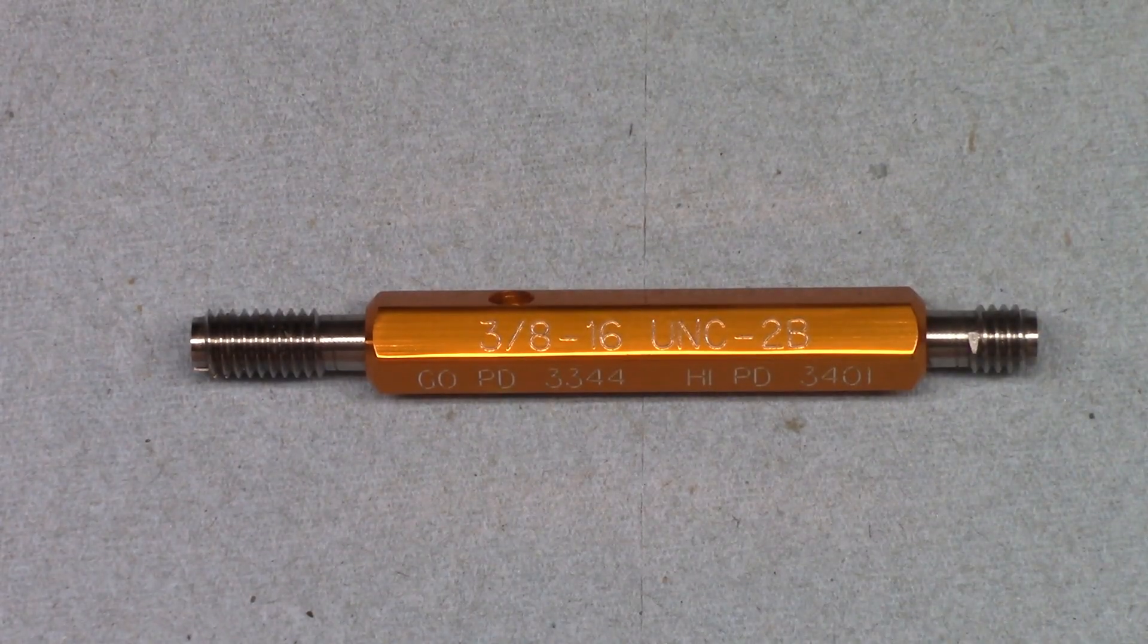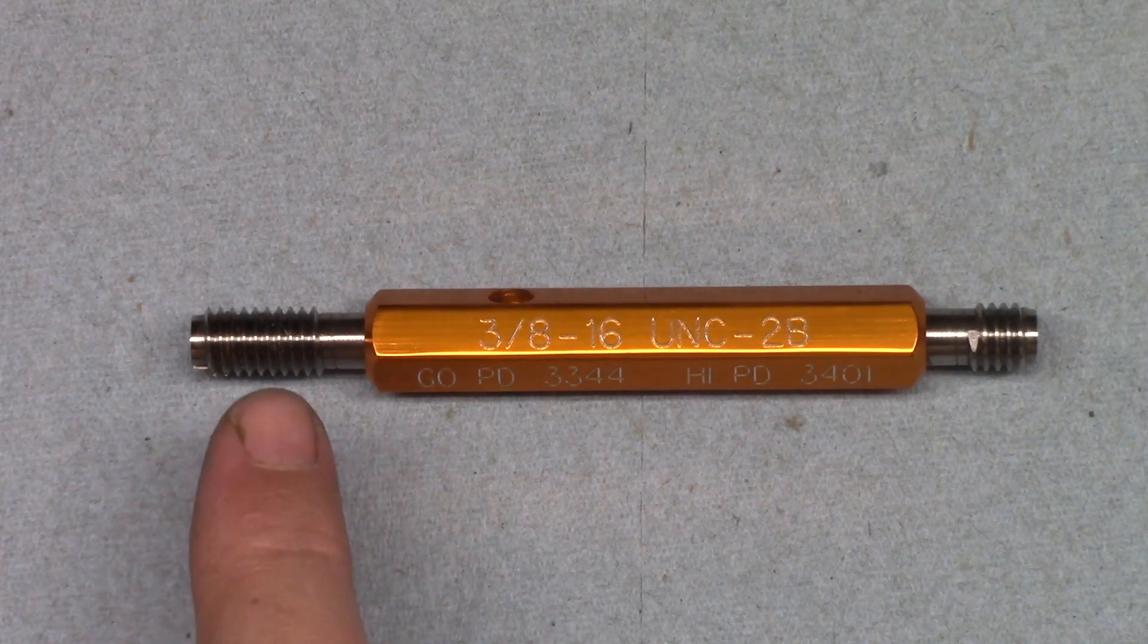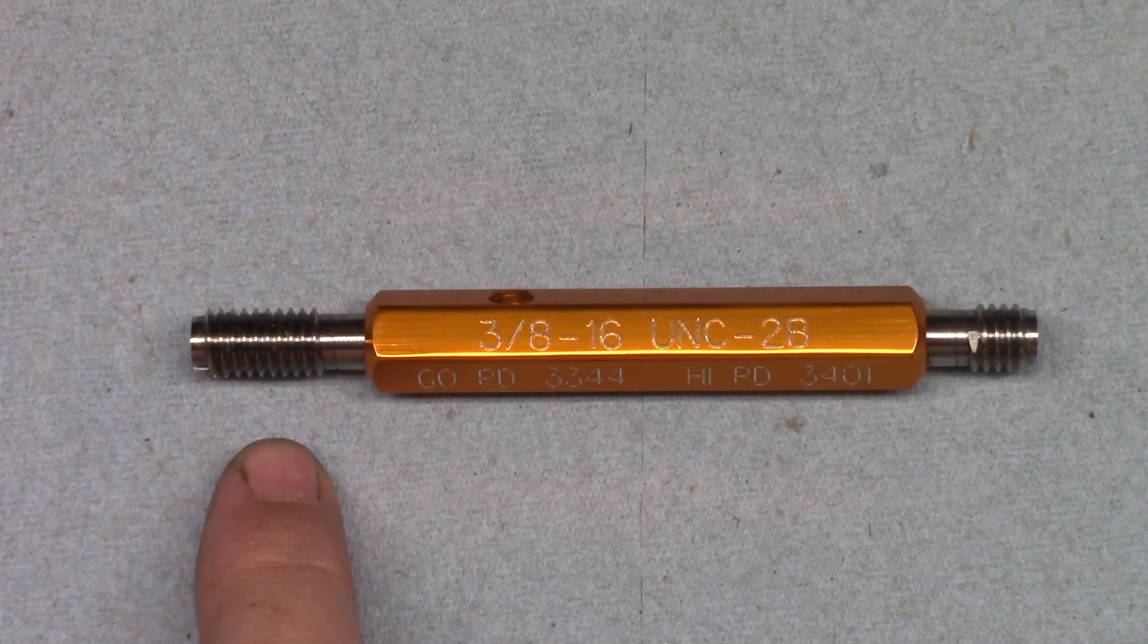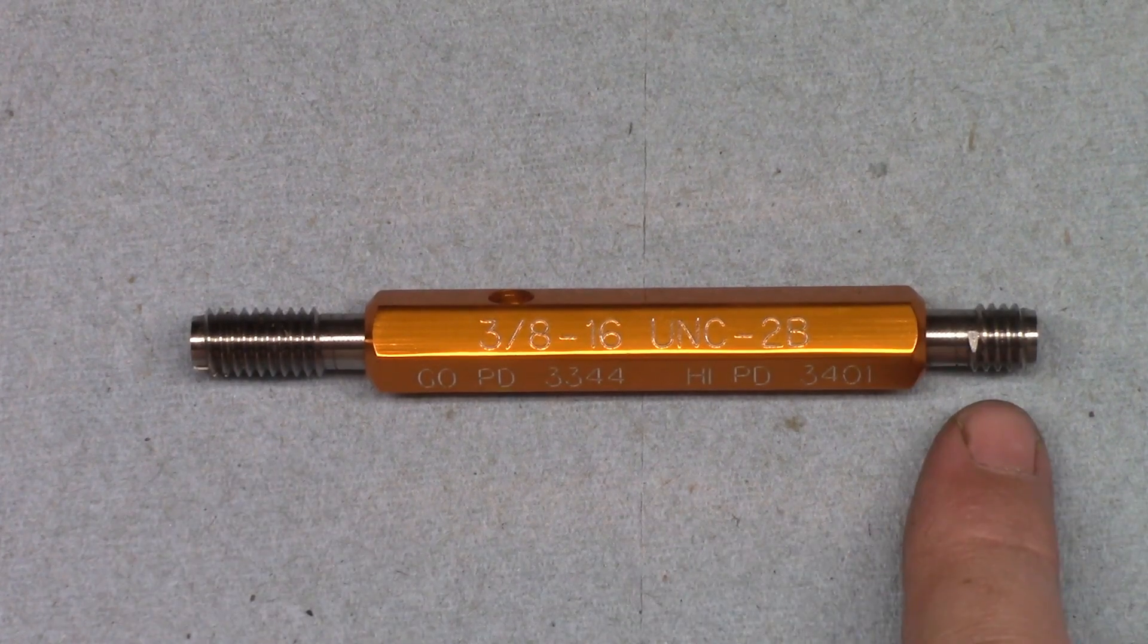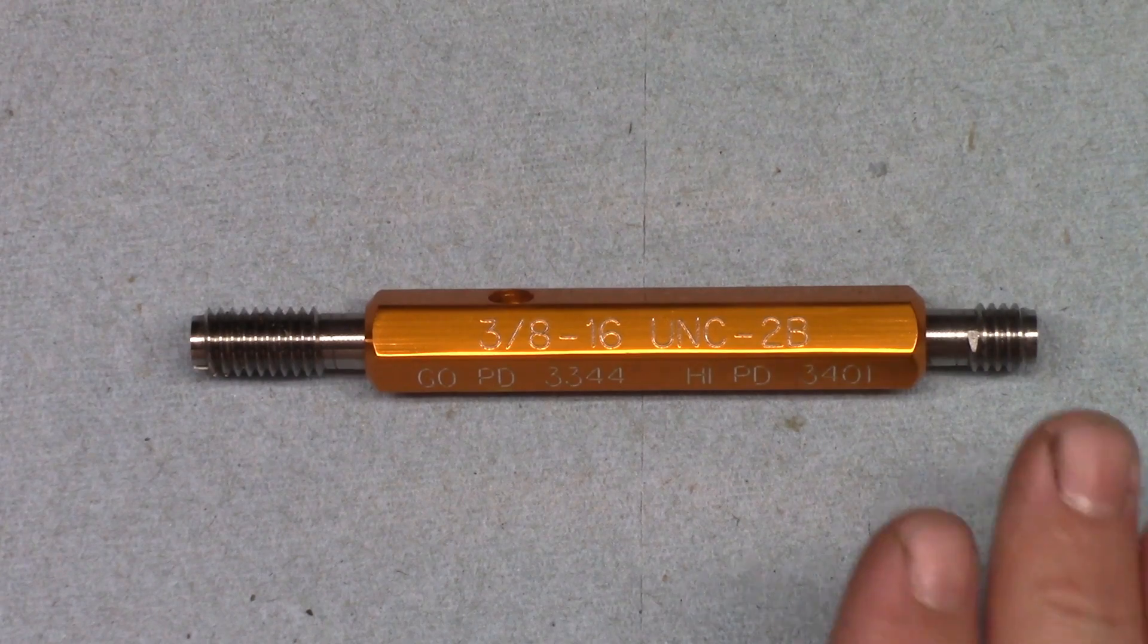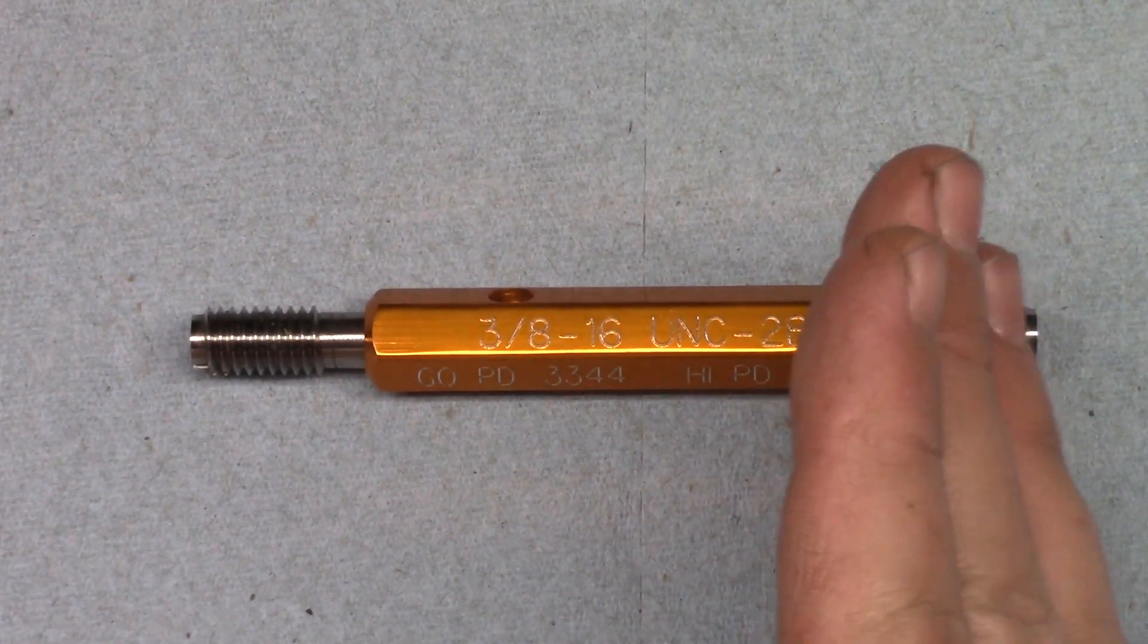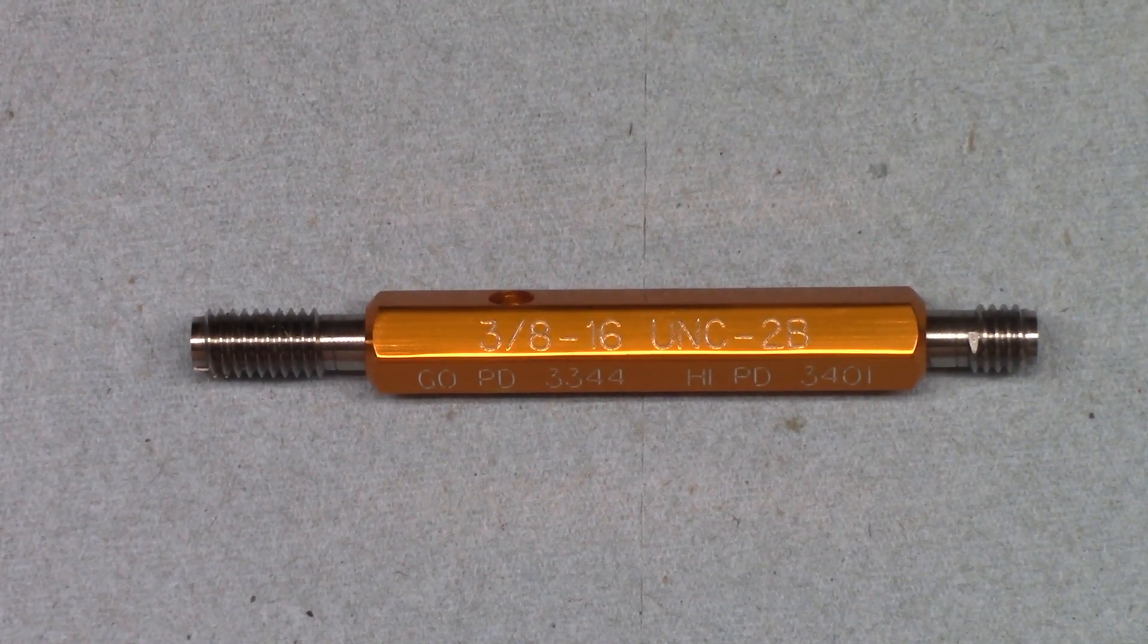Now let's look at the plug gauges. These are used for checking internal threads, and in this case the go gauge is the small end of the pitch diameter range, while the no-go side is the large end. For easy identification, the no-go gauge is shorter, which is probably also because it definitely should not thread that far into your part.